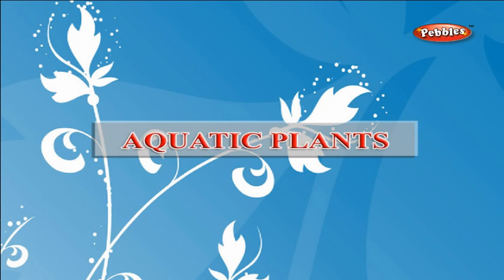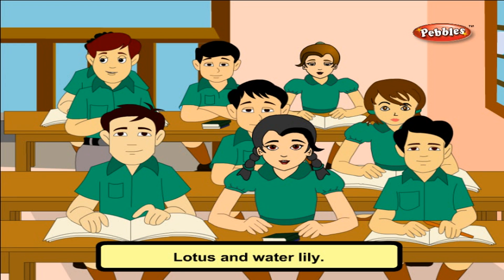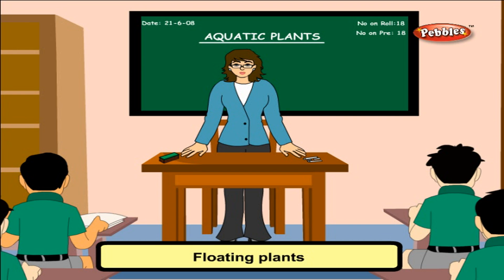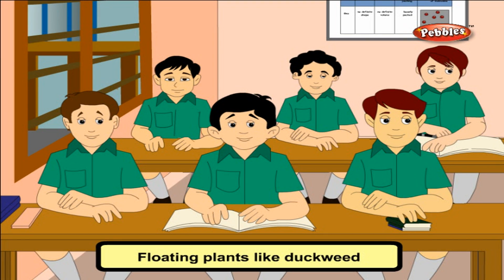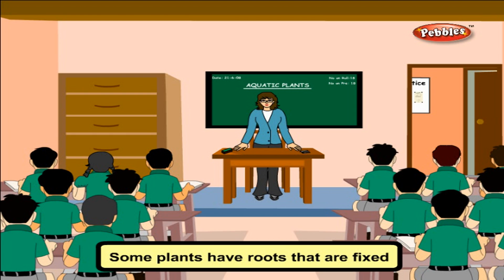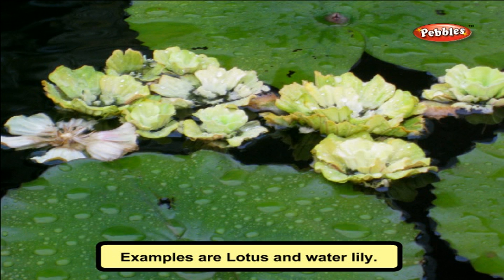Aquatic Plants: Aquatic plants are plants that grow in water. Examples include lotus and water lily. The aquatic plants are of three kinds: floating plants, fixed plants, and underwater plants. Some plants like duckweed and water hyacinth have light and spongy stems that help them to float on water. Some plants have roots that are fixed in the mud at the bottom of the pond — they are called fixed plants. Examples are lotus and water lily.